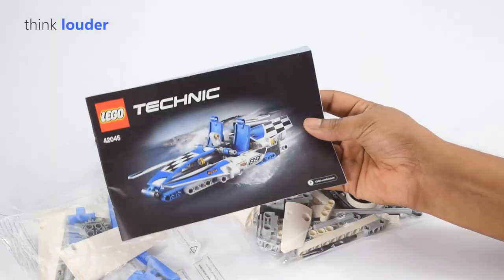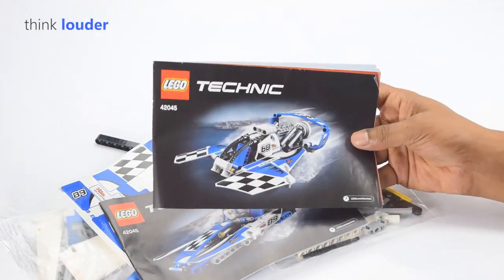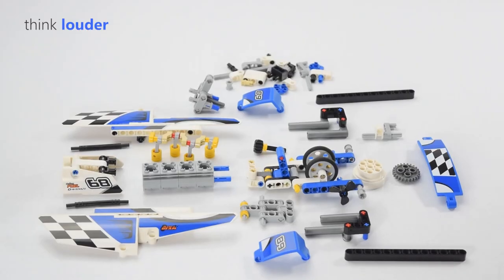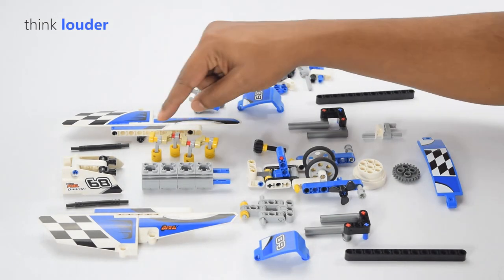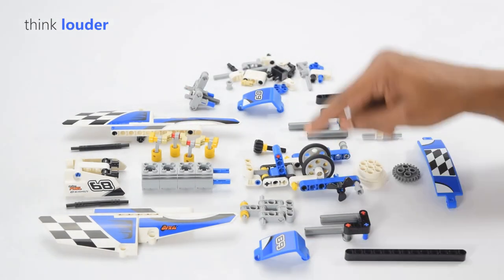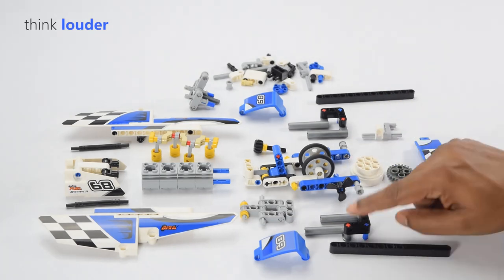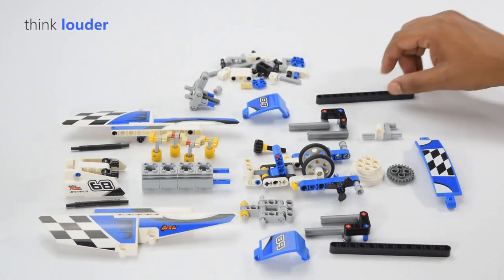When you lay out all these parts, you really come to know how this is going to come together. You can see the engine components right in the front, the wings, the side wings, the wheels, and the propeller and some of the beautiful parts that you see there.